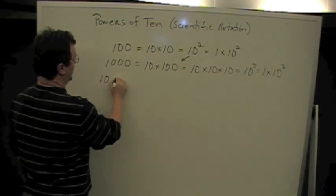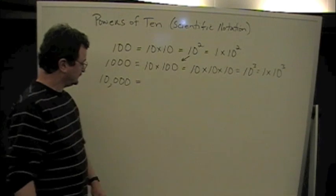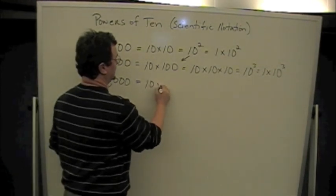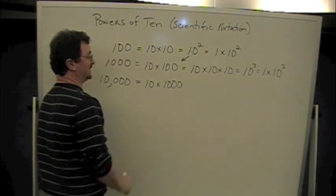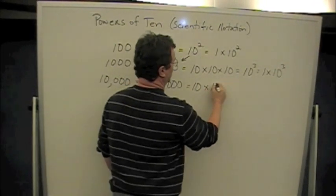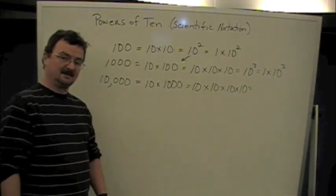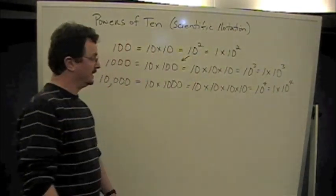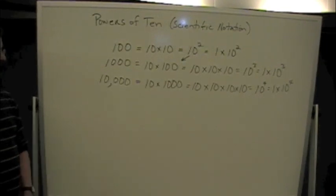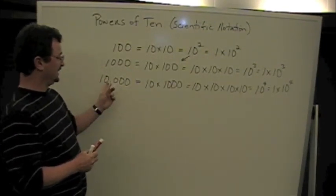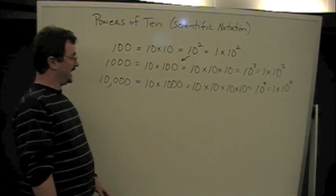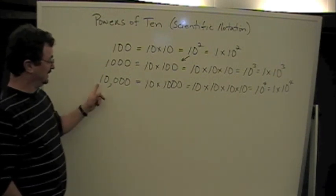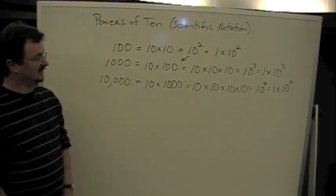Let's take it one more step: ten thousand. Ten thousand is going to be ten times a thousand. We already know that a thousand is ten times ten times ten, so ten thousand is ten times ten times ten times ten — that's ten to the fourth, or one times ten to the fourth. It seems as though the exponent is just the number of zeros, and in some cases where you only have one non-zero digit, that works out very nicely. But these numbers are all perfect multiples of ten, so in the real world we have other numbers.